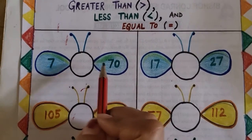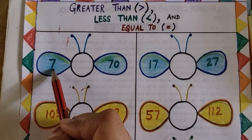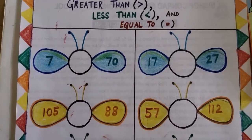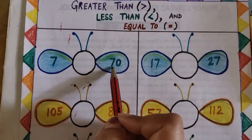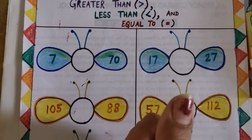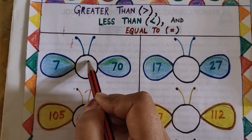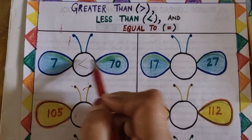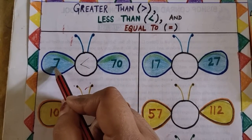We have 7 this side and 70 that side. So imagine if you have 7 apples and you have 70 apples, which one is greater? It's 70 because it's a two digit number. Right, 70 apples are more than 7 apples. So we will be writing, since 70 is greater, the open mouth will face 70, and closed mouth will face 7.